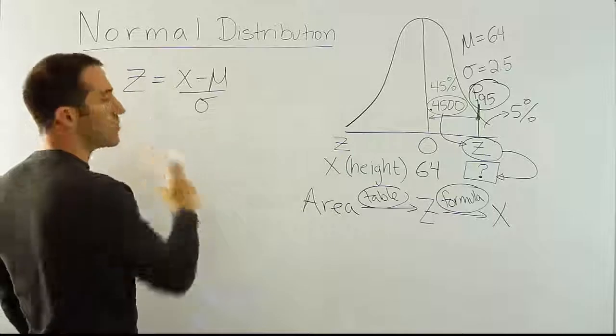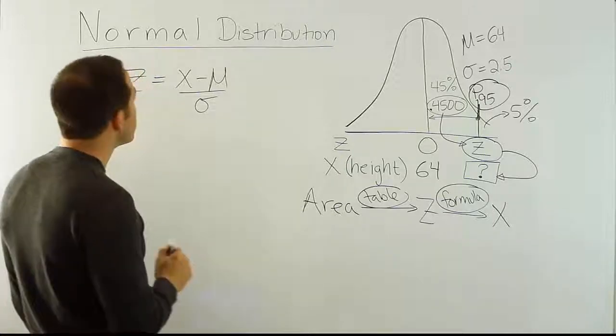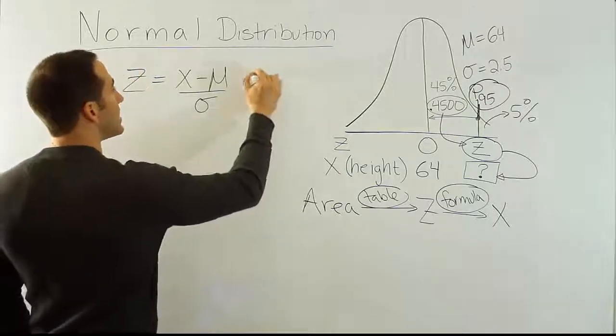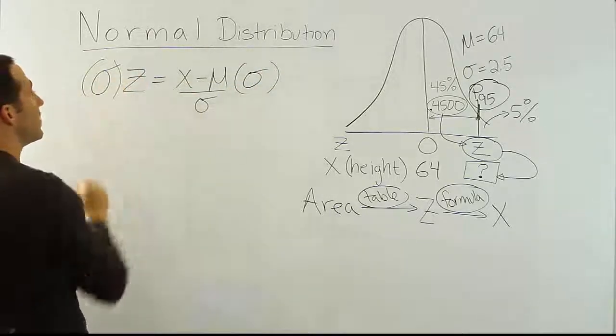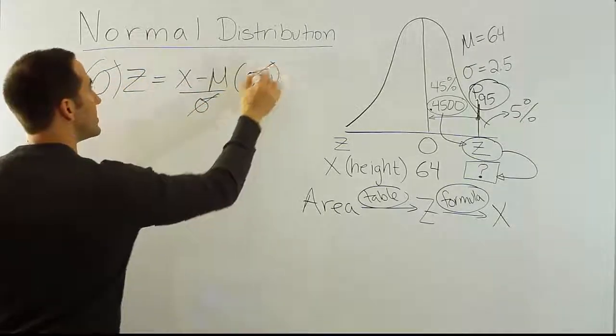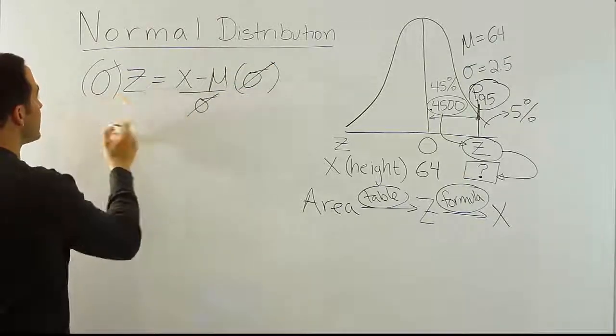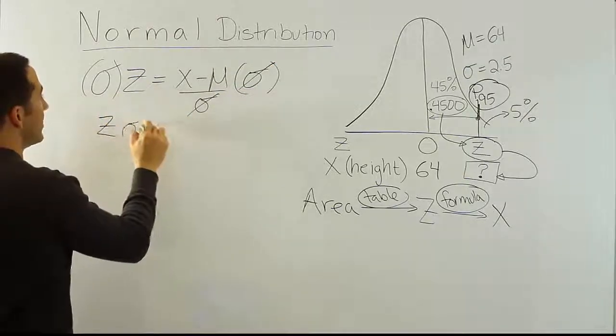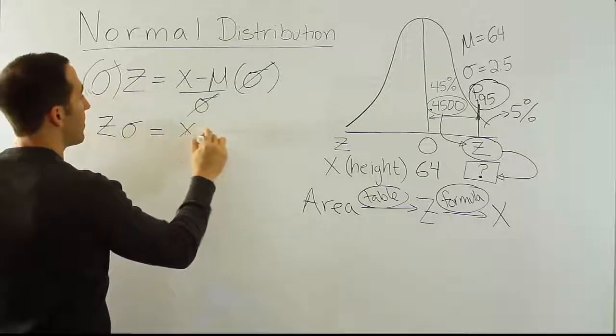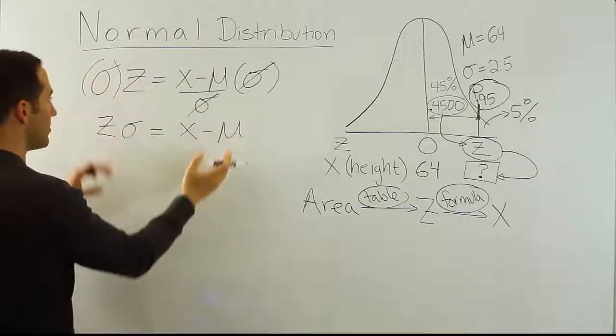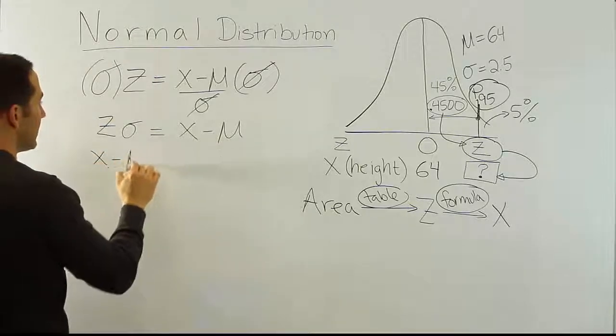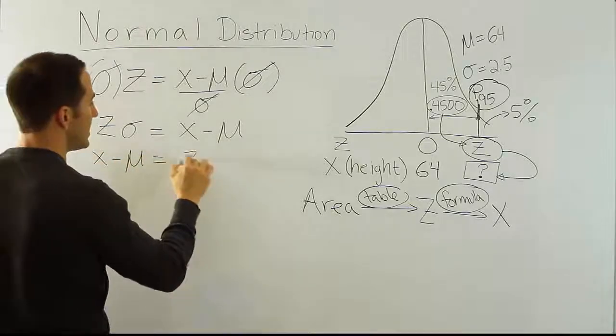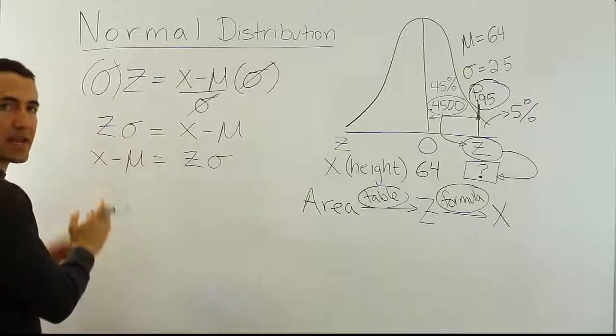Let's do that quickly. Let's solve this formula for x. So it no longer says z equals, but rather it will say x equals. To do that, I'm going to multiply both sides by σ. And if I do that, σ here and σ here cancel out. And then z times σ, of course, is zσ, and that will be equal to x minus the mean. I'm just going to switch this around here. So I'm going to say x minus the mean is equal to zσ. Now my x is on the right-hand side.